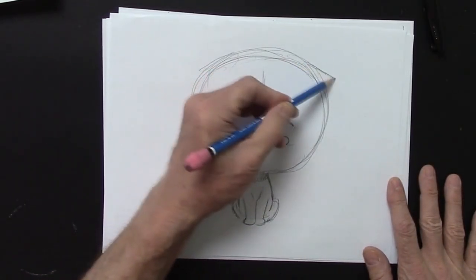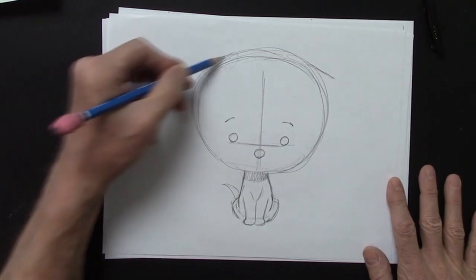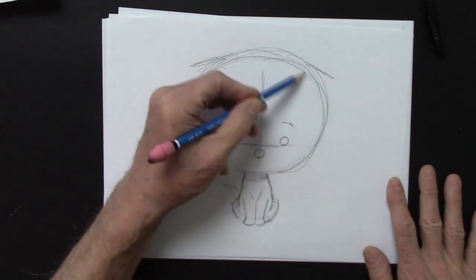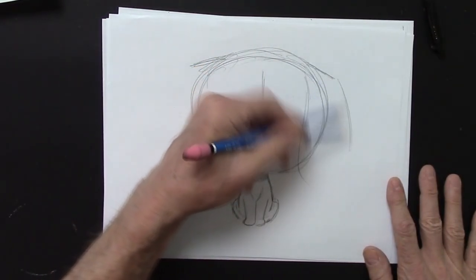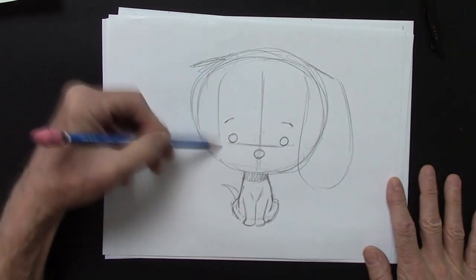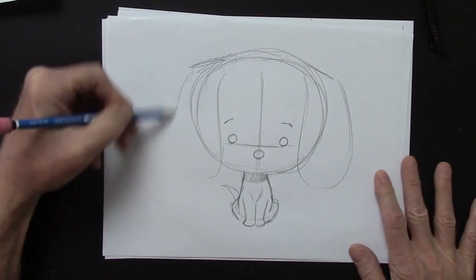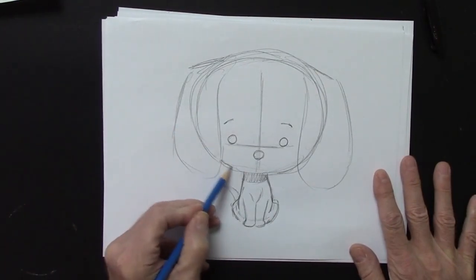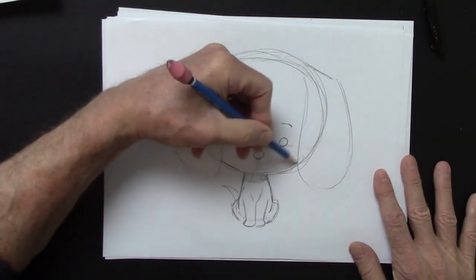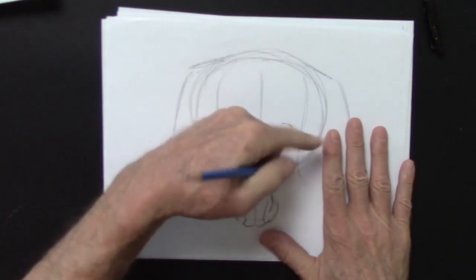And I'm going to bring this out here, and this out here. You see these two diagonal lines? That's going to be the ears. But they're going to flop over, like this. Floppy ears. Like that.